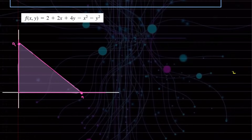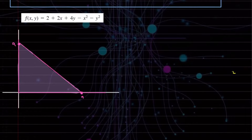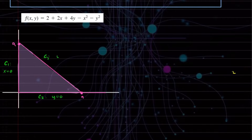This region has three boundaries. Let's label them: C1 is when x equals 0, C2 is when y equals 0, and C3 is when y equals 9 minus x.